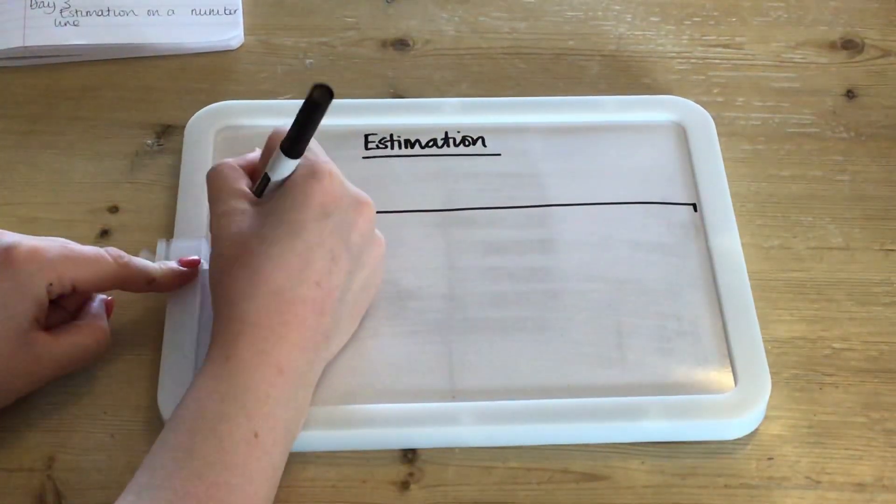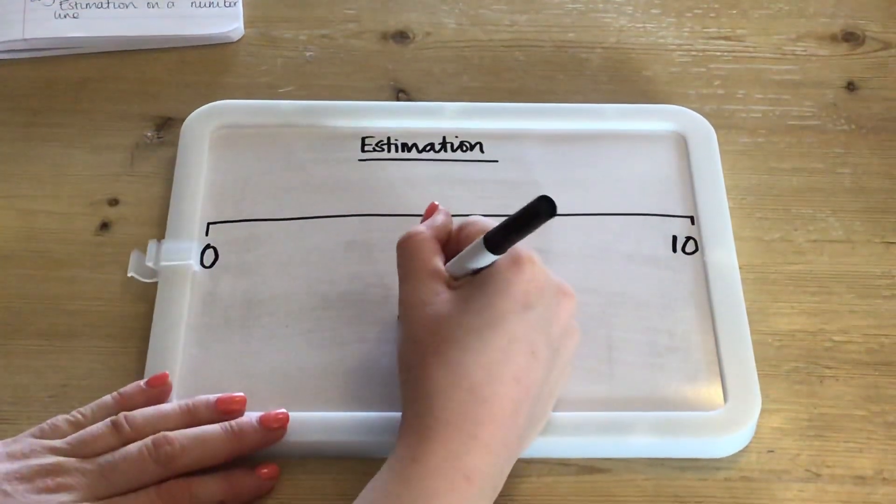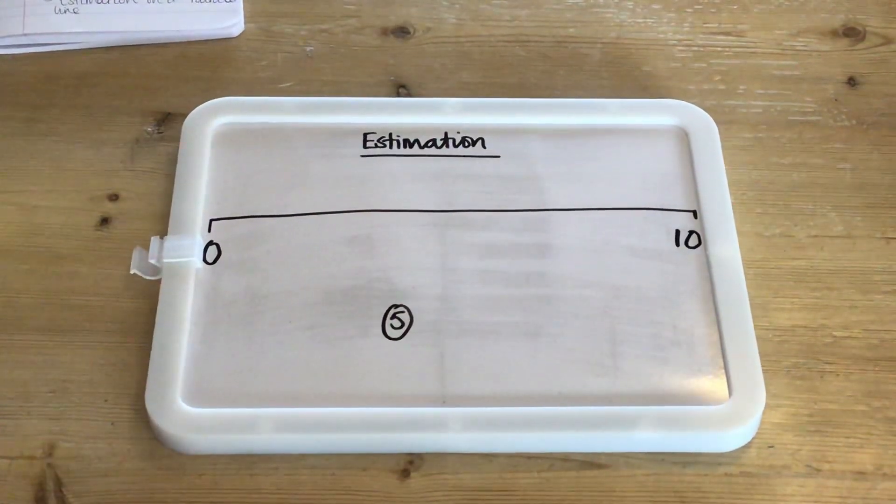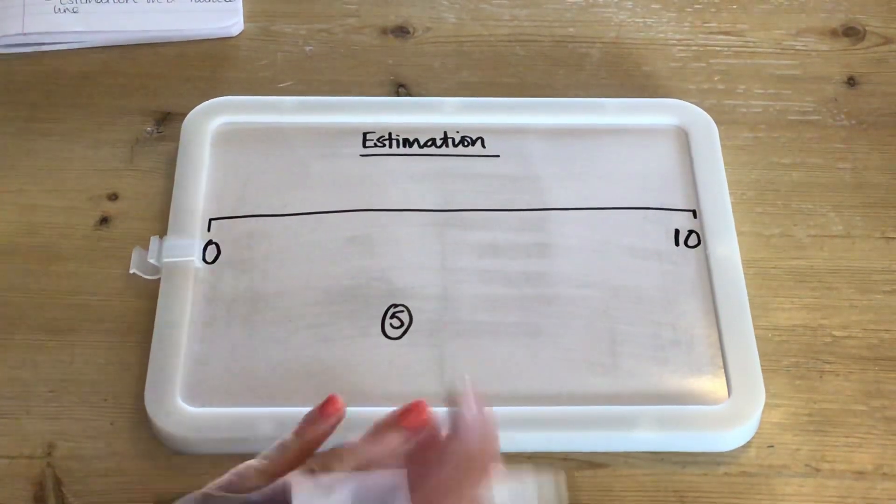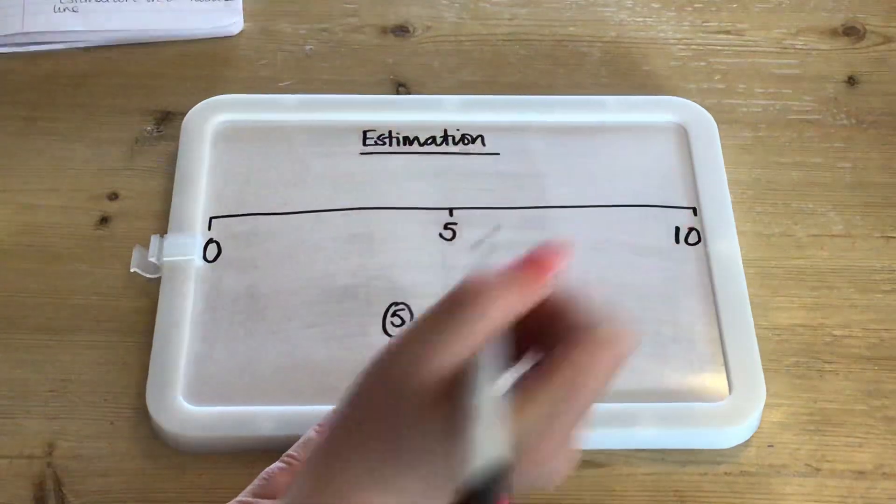We're first of all going to look at a range of 0 to 10 and we're going to think about where the number 5 will go on our number line. Now we know that 5 is right in the middle of 0 and 10 so we're going to choose this part here to put 5 on.